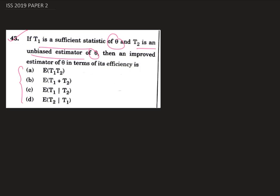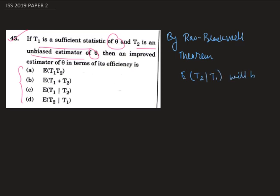To solve this we have to know the Rao-Blackwell theorem. By the Rao-Blackwell theorem, if T1 is a sufficient statistic and T2 is an unbiased estimator, then the expected value of T2 given T1 will be an improved estimator.